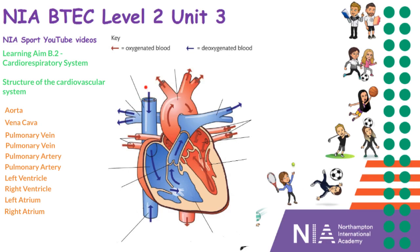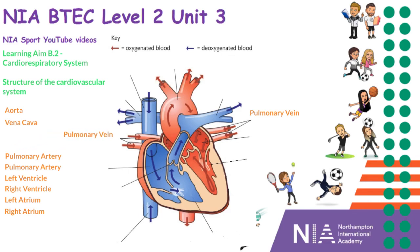Anything that's blue is deoxygenated blood coming into or out of the heart; anything that's red is oxygenated blood. To start off with, oxygenated blood will come into the heart from the lungs through the pulmonary veins. Typically, veins will always take blood to the heart, where arteries take blood away from the heart. These pulmonary veins are the only two veins that actually have oxygenated blood, because they come directly from the lungs.